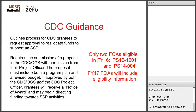PS 14-004 is a very small HCV prevention and treatment grant given to only two grantees and is already largely underfunded. Representatives of the grantees have spoken about their inability to realistically divert funds from their programming towards SSP programming. In FY17, all new FOAs will include eligibility information, and it's AIDS United's hope that more CDC grants open up as eligible for SSP funding.